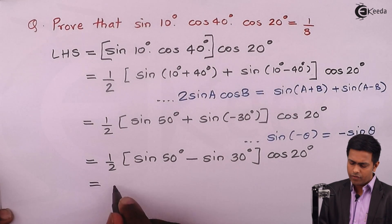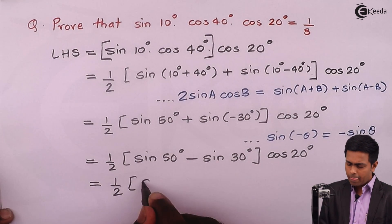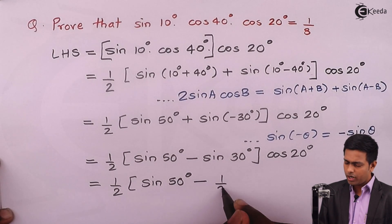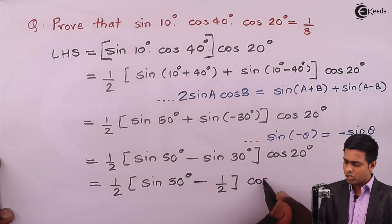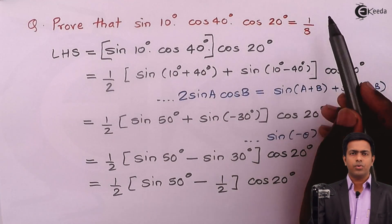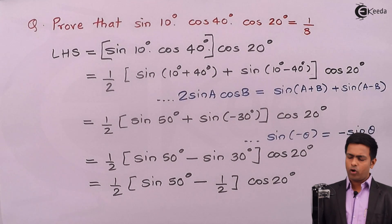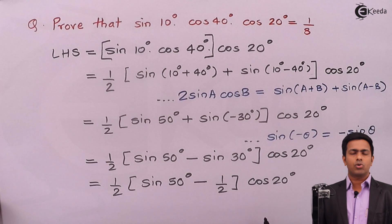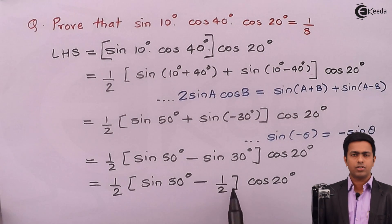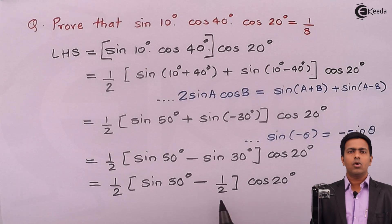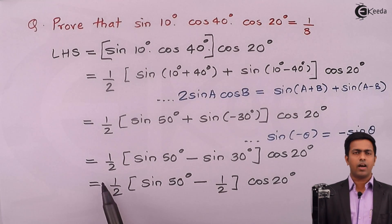We know sin(30°) = 1/2 from the table, so substituting: 1/2 · [sin(50°) − 1/2] · cos(20°). Taking cos(20°) inside the bracket, we get 1/2 · [sin(50°)·cos(20°) − 1/2·cos(20°)].